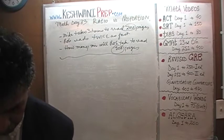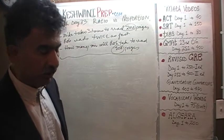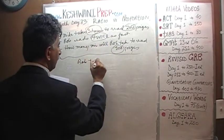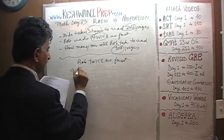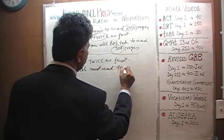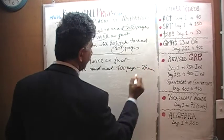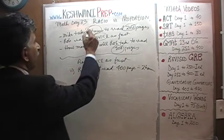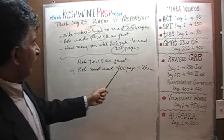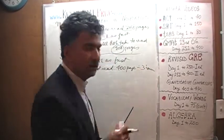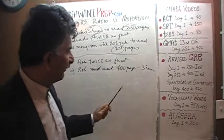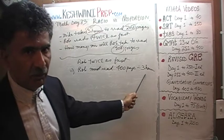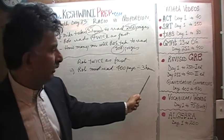Instead of setting it up as a proportion problem where there's a chance of making a mistake, let's think logically. Mike takes 3 hours to read 200 pages. Bob reads twice as fast, so Bob must read 400 pages in 3 hours. I thought for a second it was two hours — but it's three hours. Had it been two hours, 400 pages in two hours would have meant 100 pages in half an hour — too simple. It's three hours, so we just have to do a little bit of calculation.